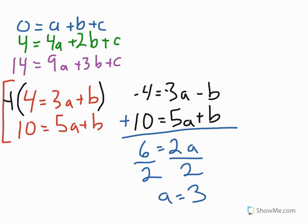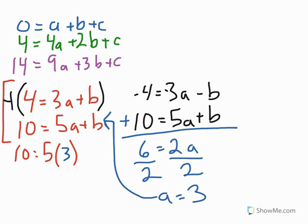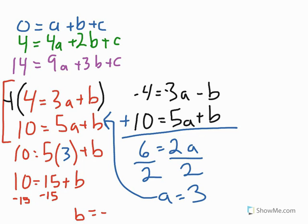Now that I know a equals 3, I can plug that into one of the two-variable equations. I'll use 10 equals 5a plus b. Substituting a equals 3: 10 equals 5 times 3 plus b, so 10 equals 15 plus b. Subtracting 15 from both sides gives b equals negative 5.